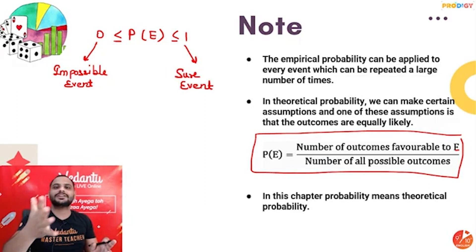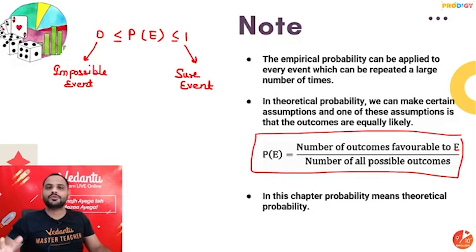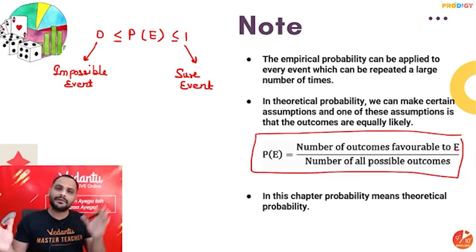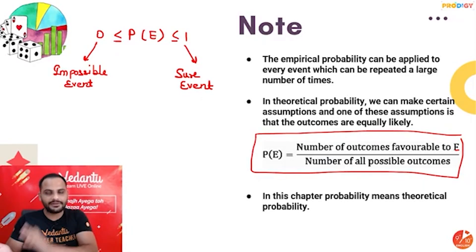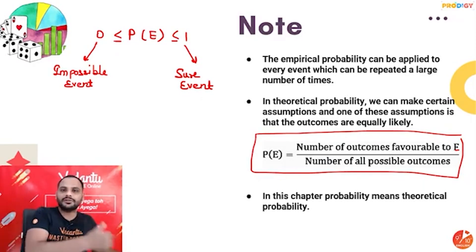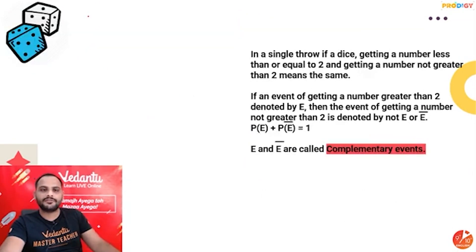If probability is 1, that means all outcomes are favorable to the event — this is a sure event, which is definitely going to happen. For example, the probability of getting a natural number while throwing a dice — 1, 2, 3, 4, 5, 6 are all natural numbers, so every time you throw you get a natural number. The more probability is closer to 1, the more likely it is to happen; the closer to 0, the less the chance.